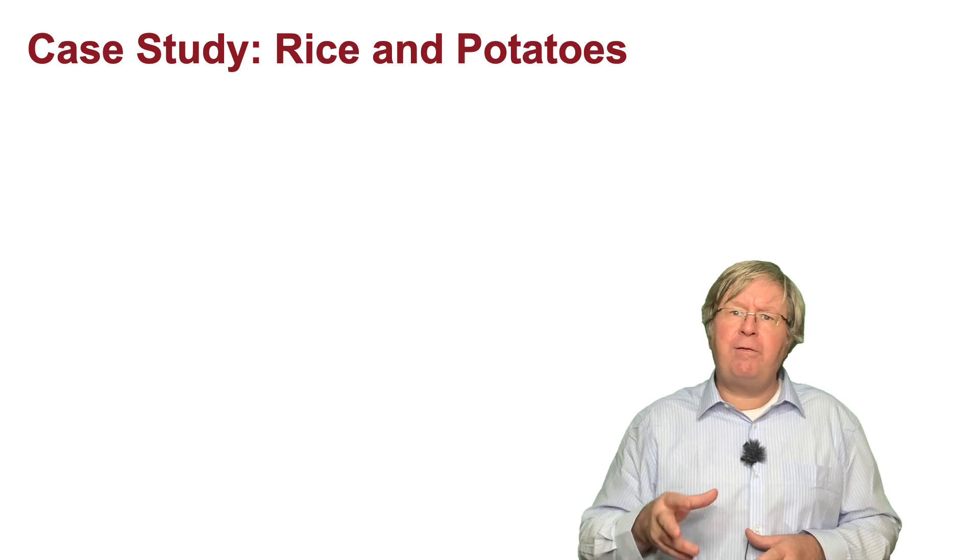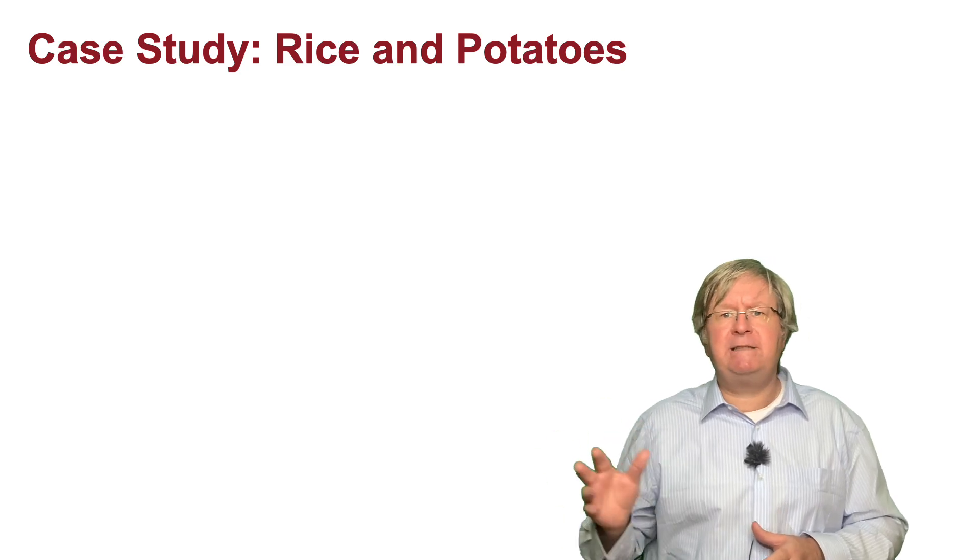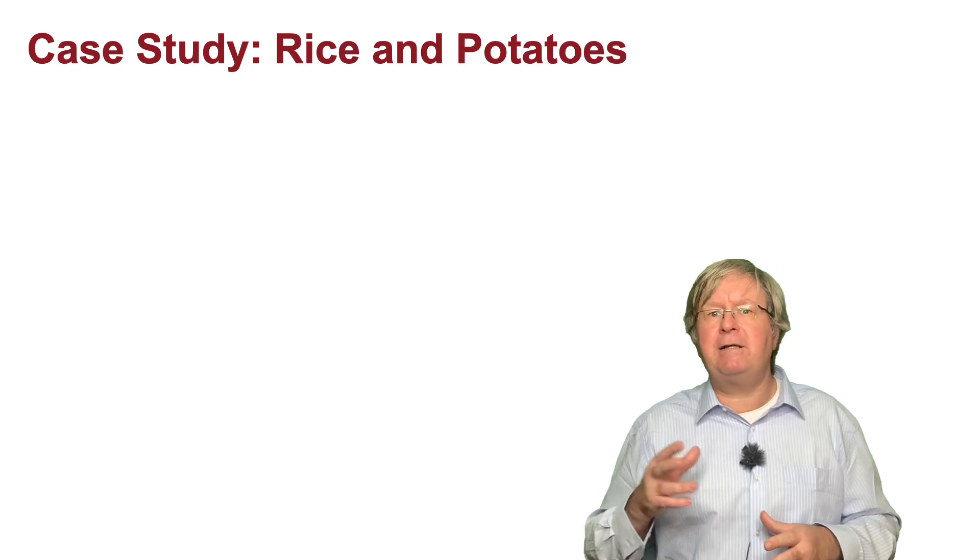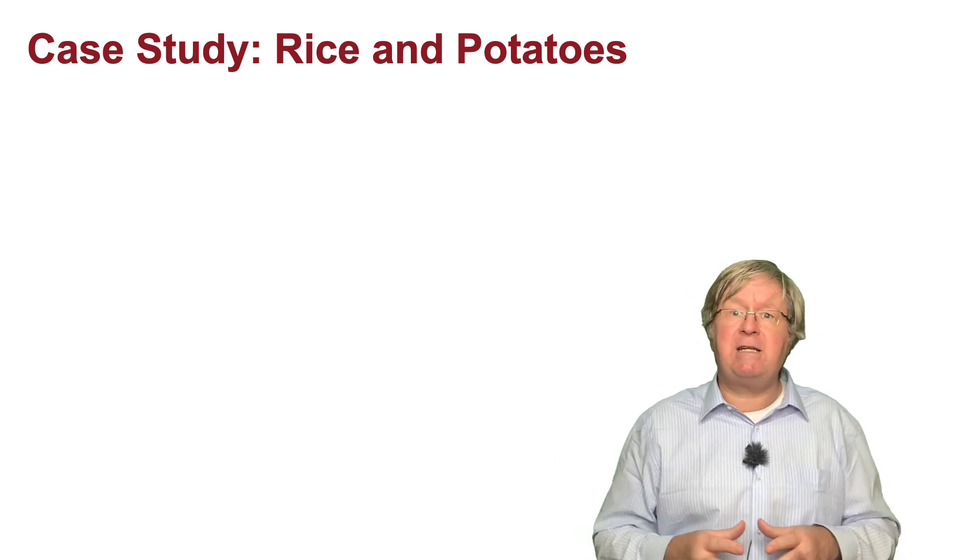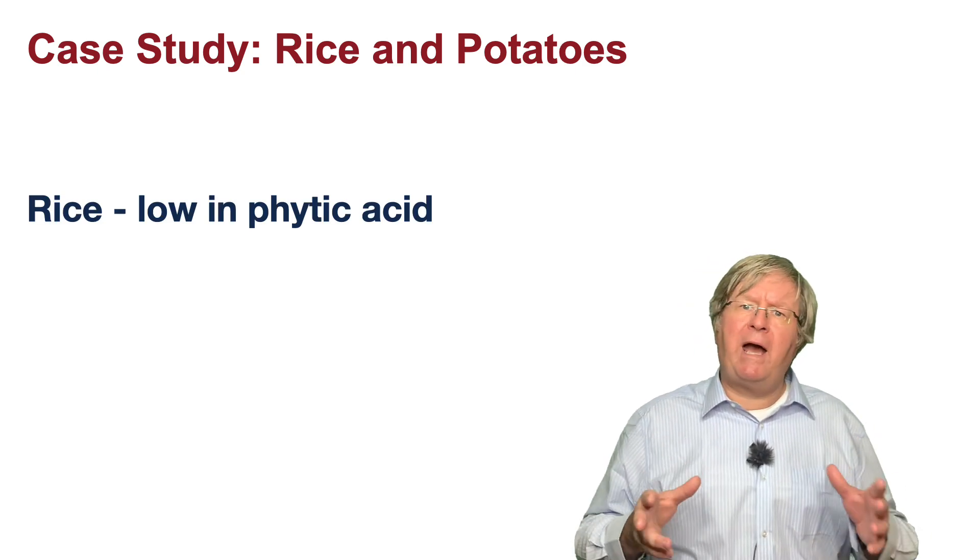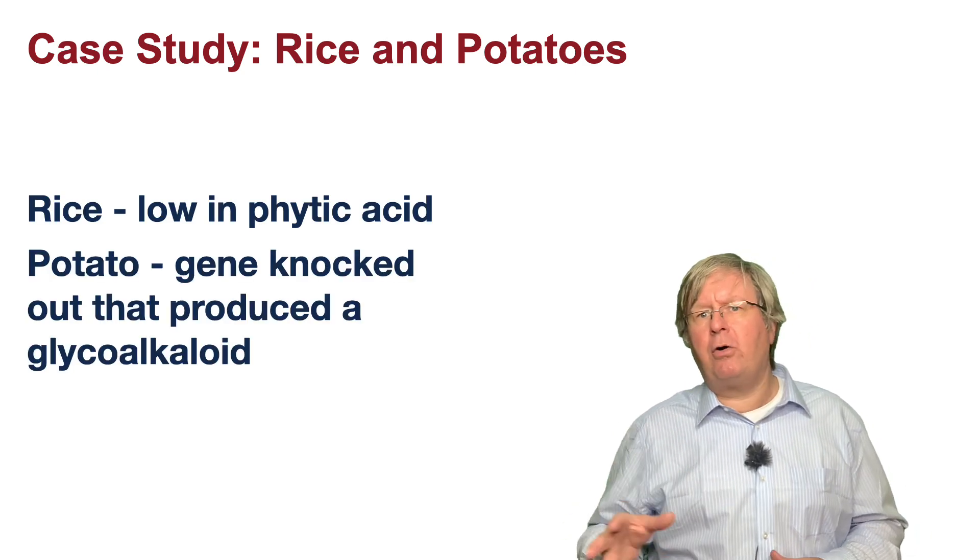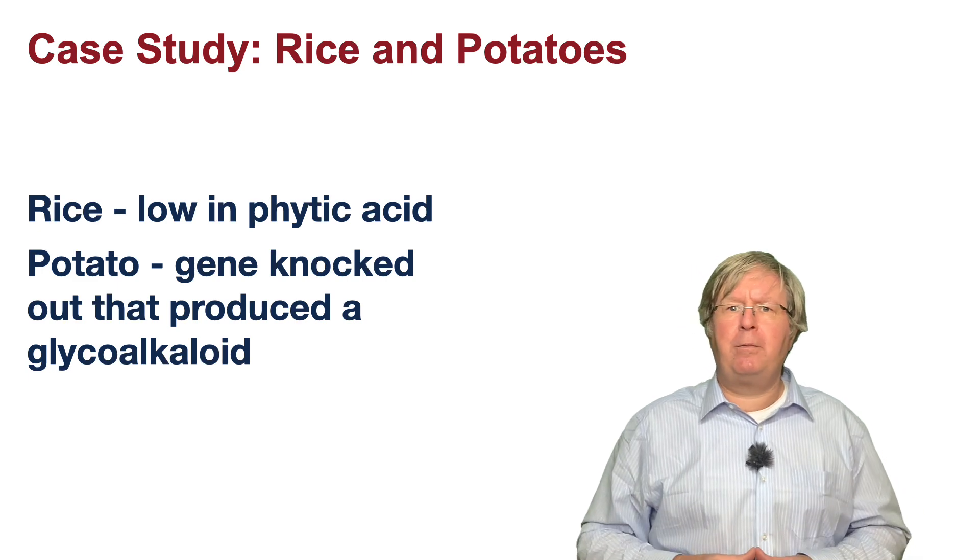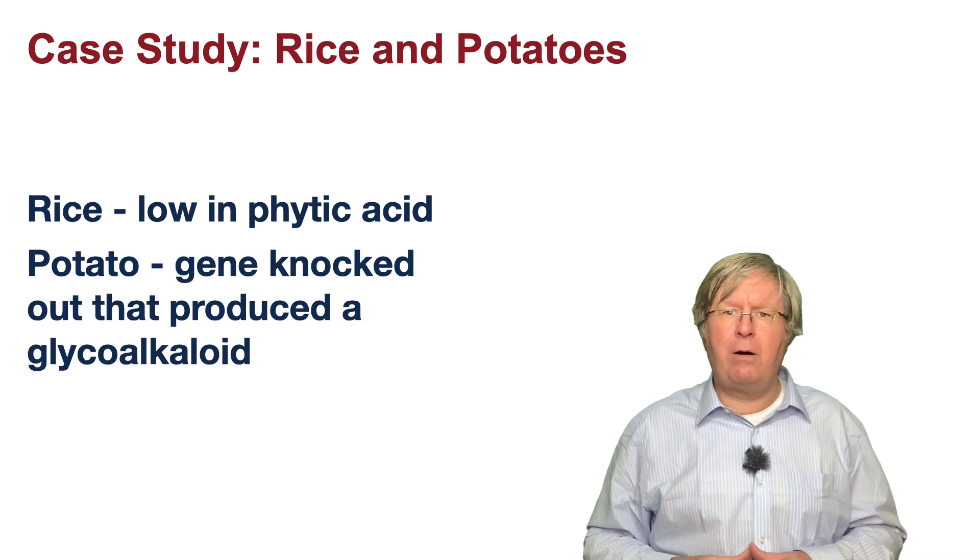In the project we focused on two main crops: rice and potatoes. Thanks to our Chinese colleagues, we had a rice that had been engineered by irradiating rice to produce a plant with a low level of phytic acid. And thanks to the group in Aberdeen, we had a potato with a gene knocked out that was responsible for the reduction of a particular glycoalkaloid.